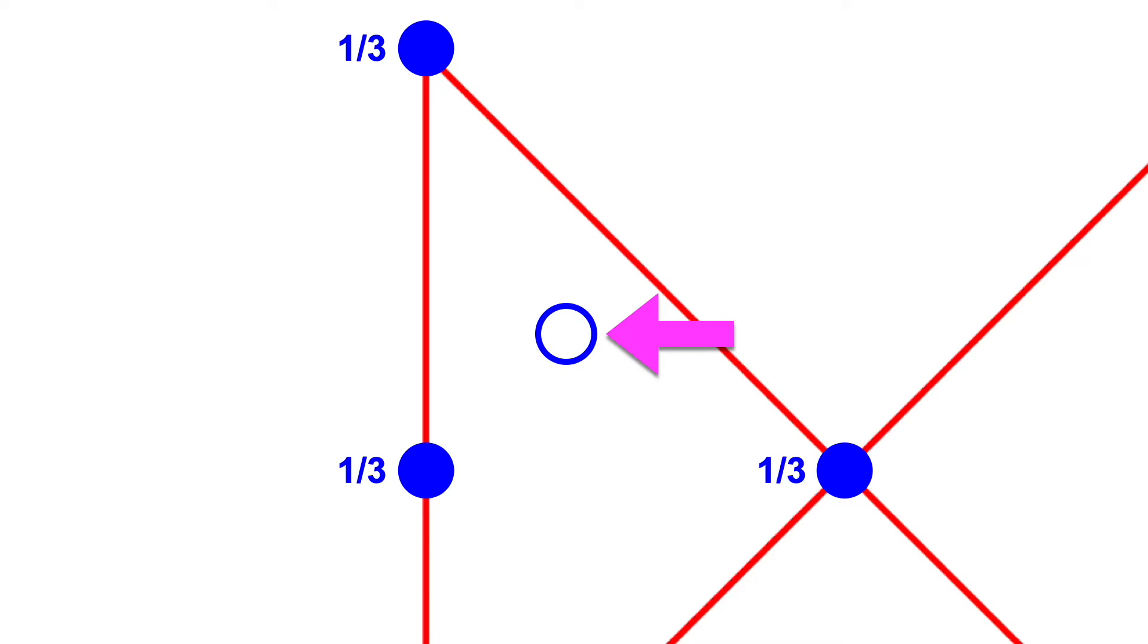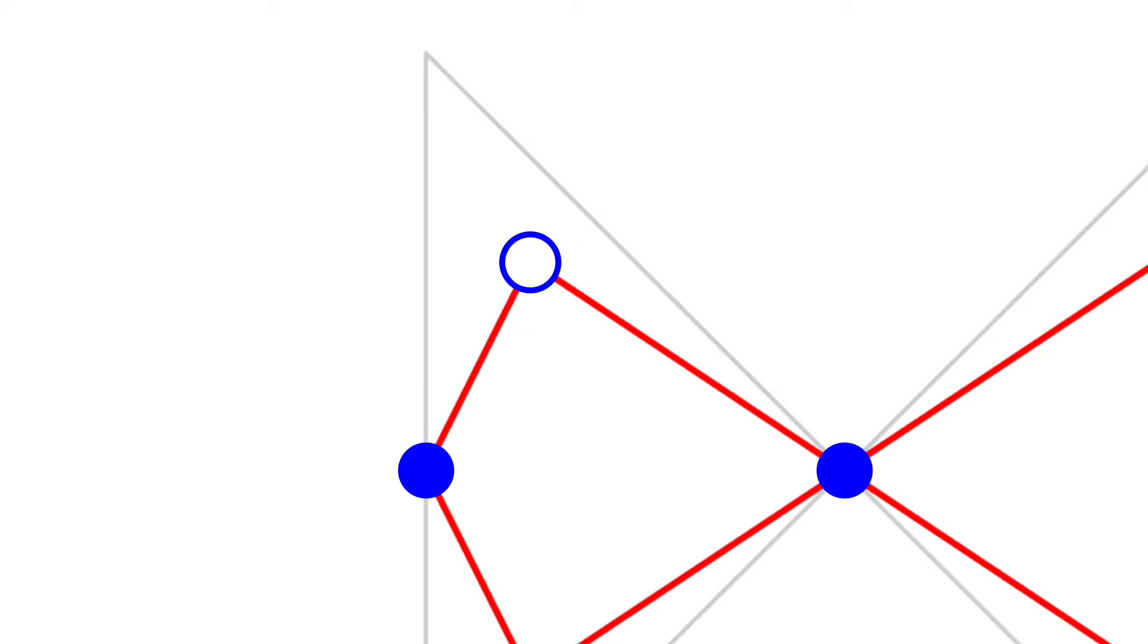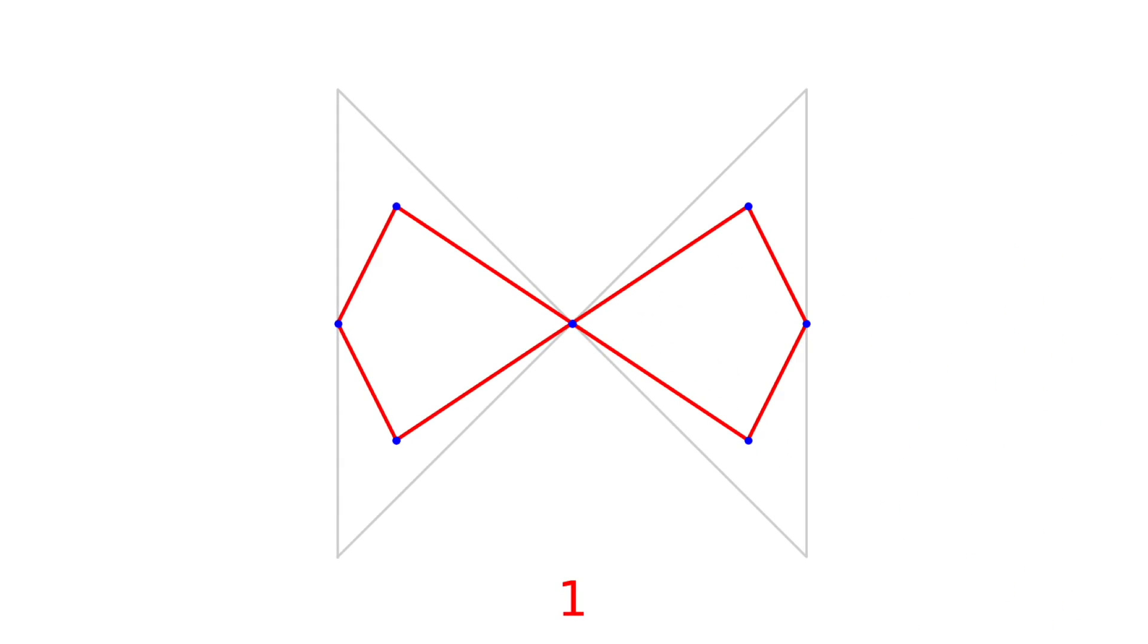But now instead of applying equal weight to each vertex, let's weight the center vertex twice as much. This averaging scheme results in a slightly different shape. Now let's split again. And average again.